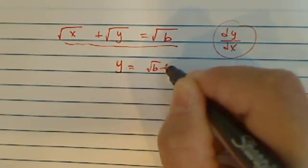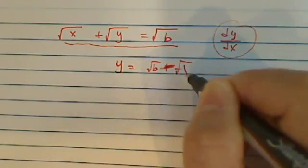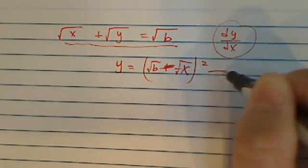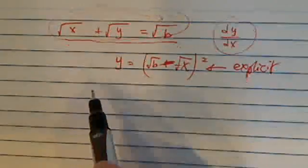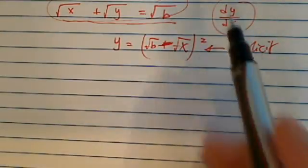In our case here, if they had it written radical b minus radical x, the whole thing squared, this would be the explicit form. This one is implicit in that they didn't solve for y. So our job is to find what dy/dx is.